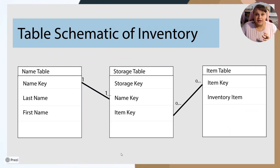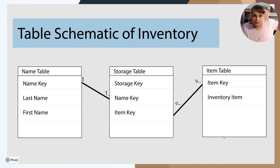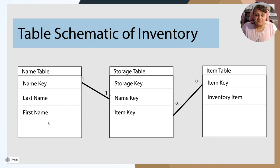Let's look at one real quick. I've created three tables — this is normalization from the last video we did on normalization. I've done a schematic of the table name and all the fields in it. I have a name table, a storage table, and an item table. My schematic lists each field: name key, last name, and first name for my example.